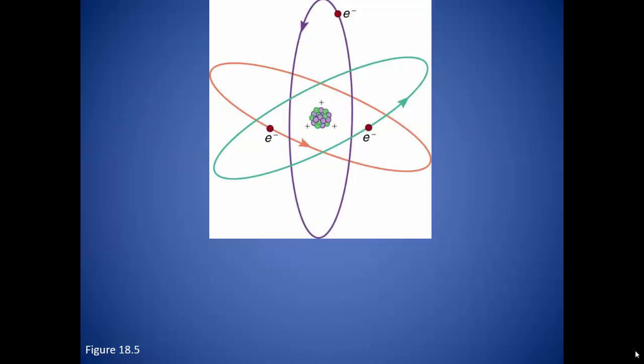To understand where the charges come from, we need to know a little bit about the structure of the atom. You probably already know that in a simple model of an atom, there are three main subatomic particles.